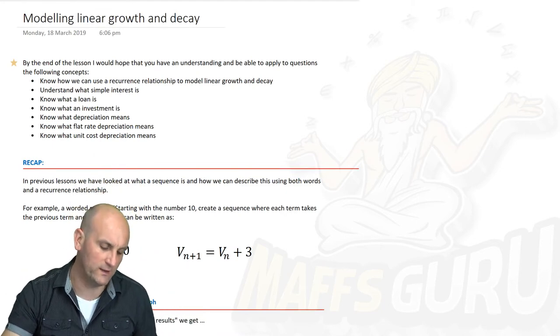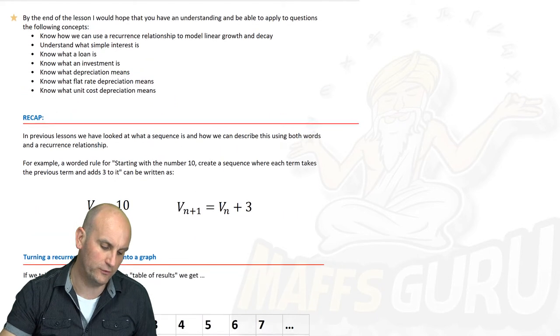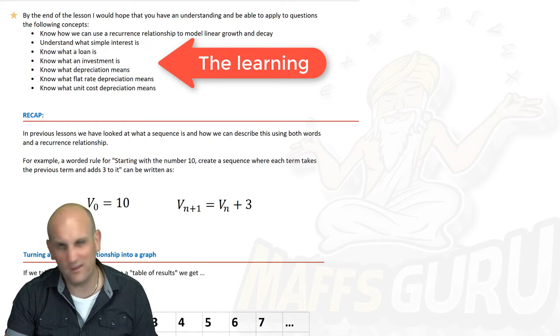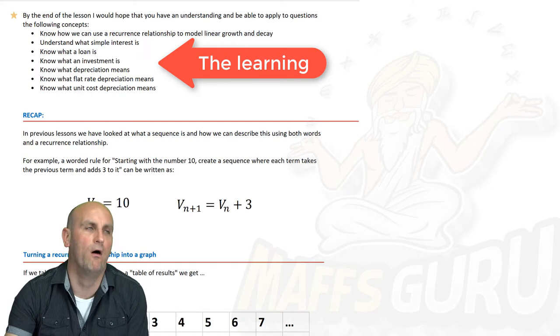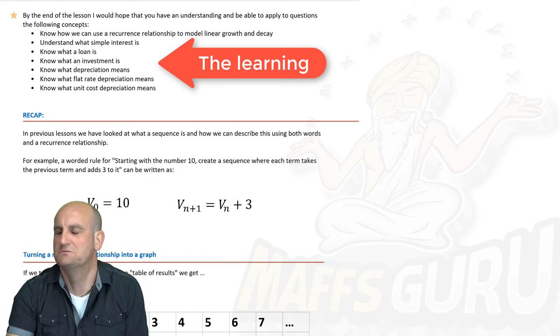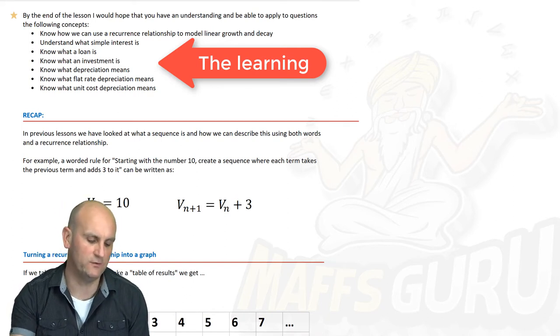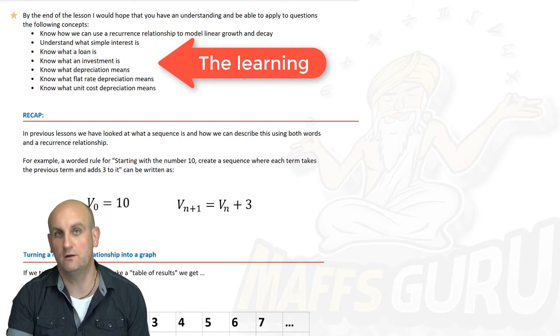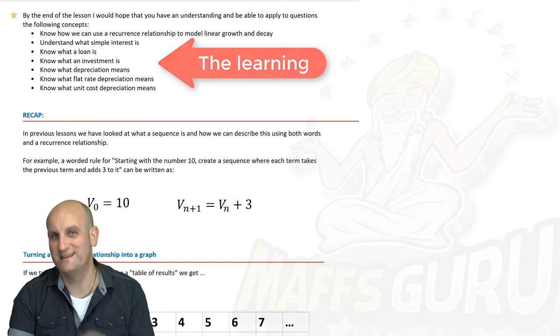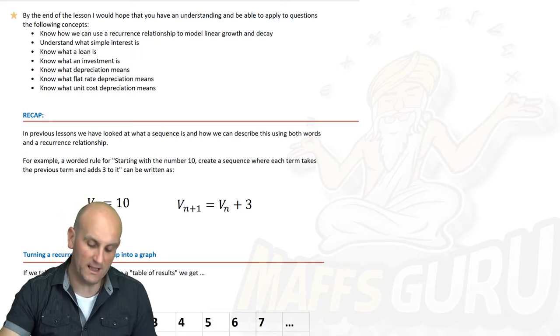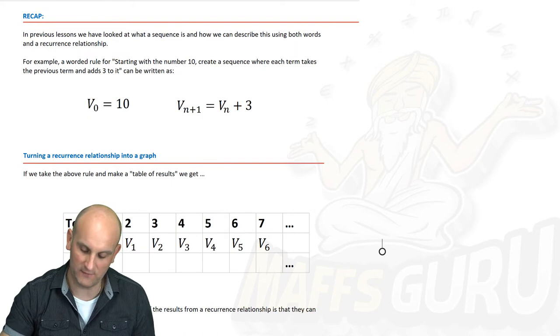Now, modeling linear growth and decay. What are we going to do by the end of this video? Well, I hear you ask. I want you to know how we can use a recurrence relationship to model linear growth and decay. Now, I hear the words growth and decay. None of them sound particularly good. Thank you very much, medical profession. I've just got tooth decay. Well, I don't, but I've just got bad images of manky teeth. Anyway, I understand what simple interest is: loans, investments, know what the word depreciation means along with flat rate depreciation and unit cost depreciation. This topic comes up in exams pretty much every single year and it's terminology that the work actually is not particularly difficult. But before I continue, we need to do a little bit of a recap.